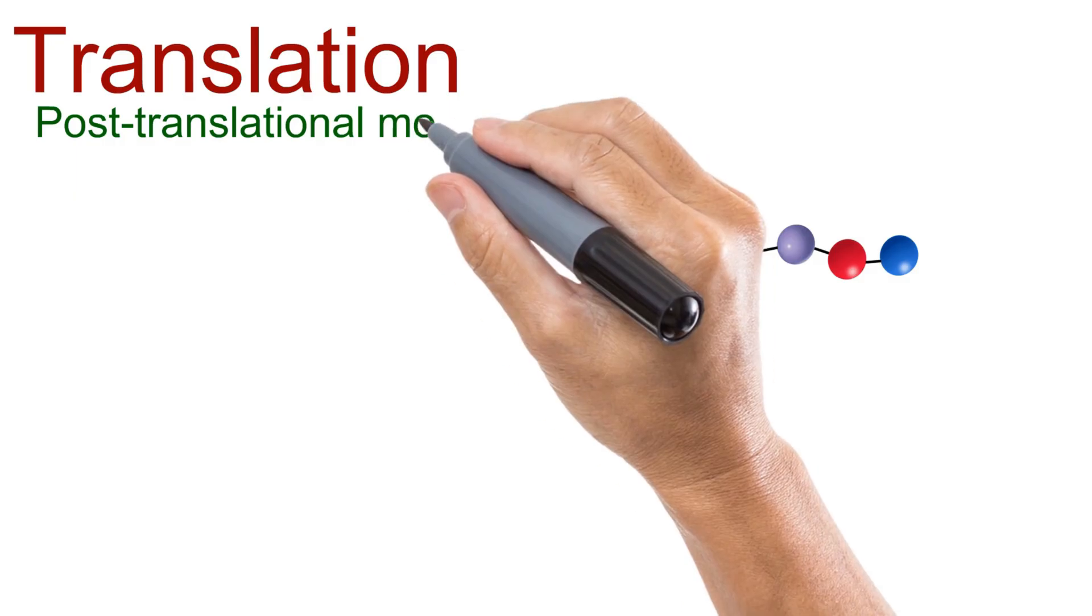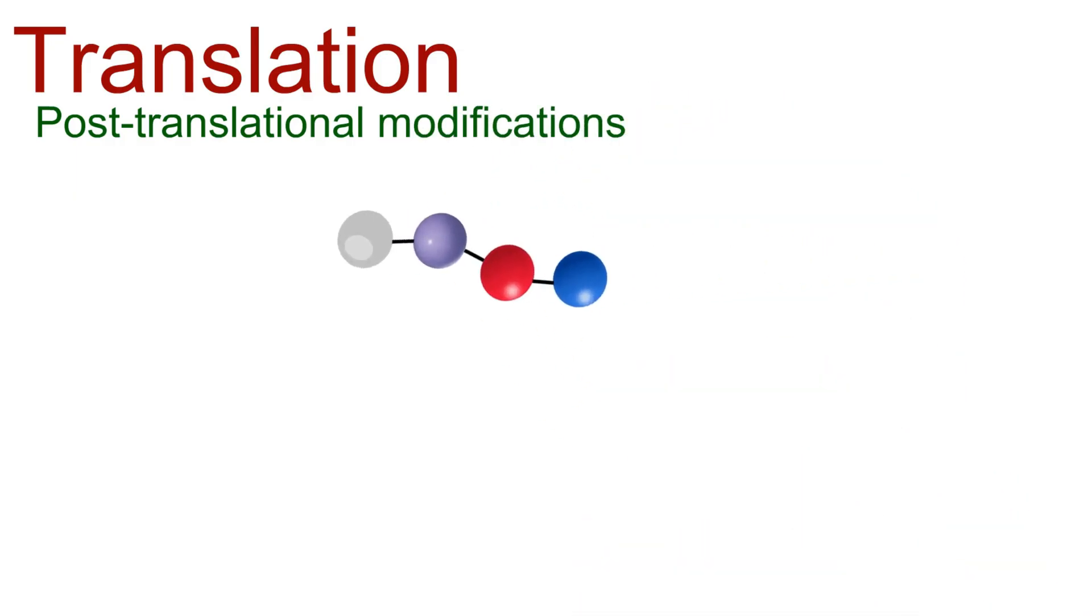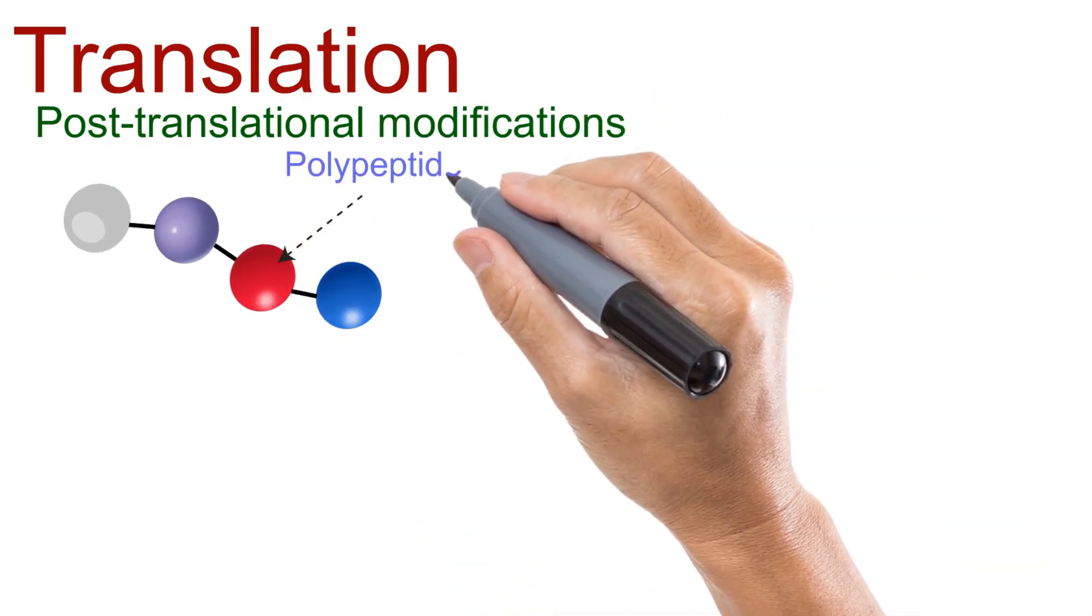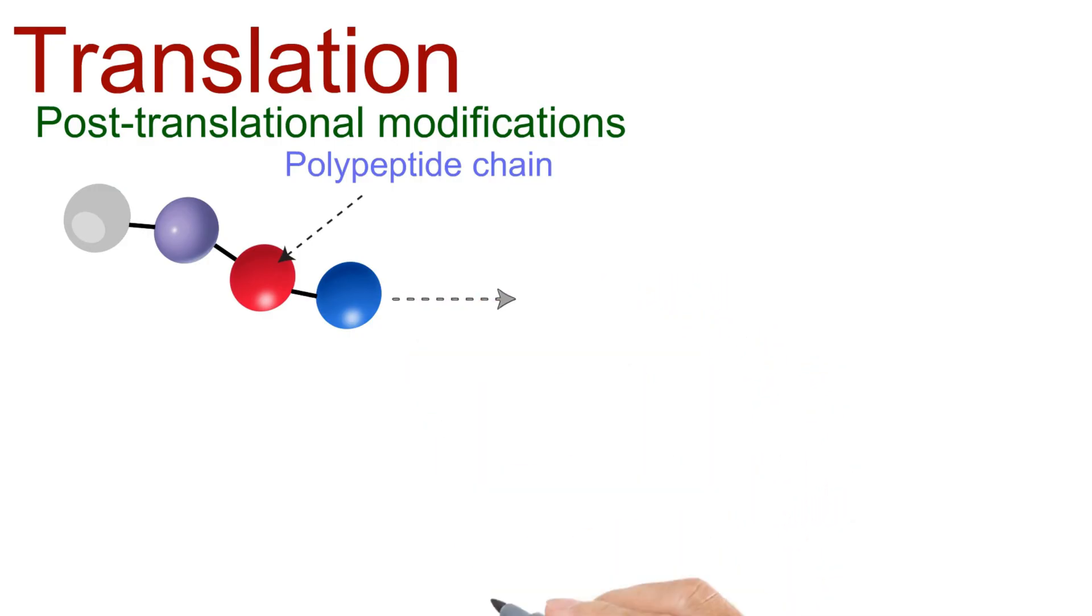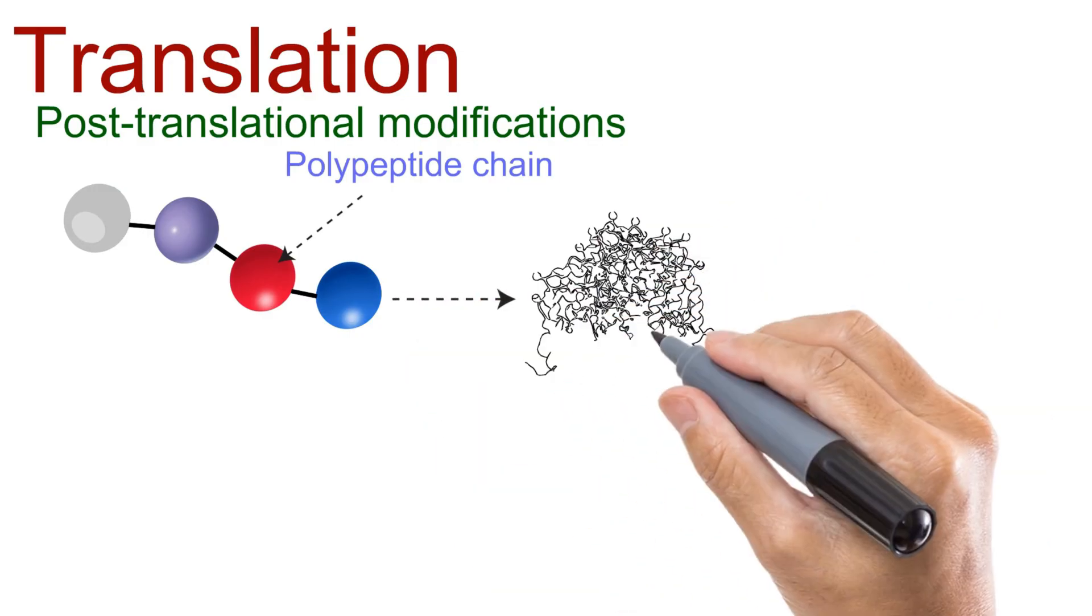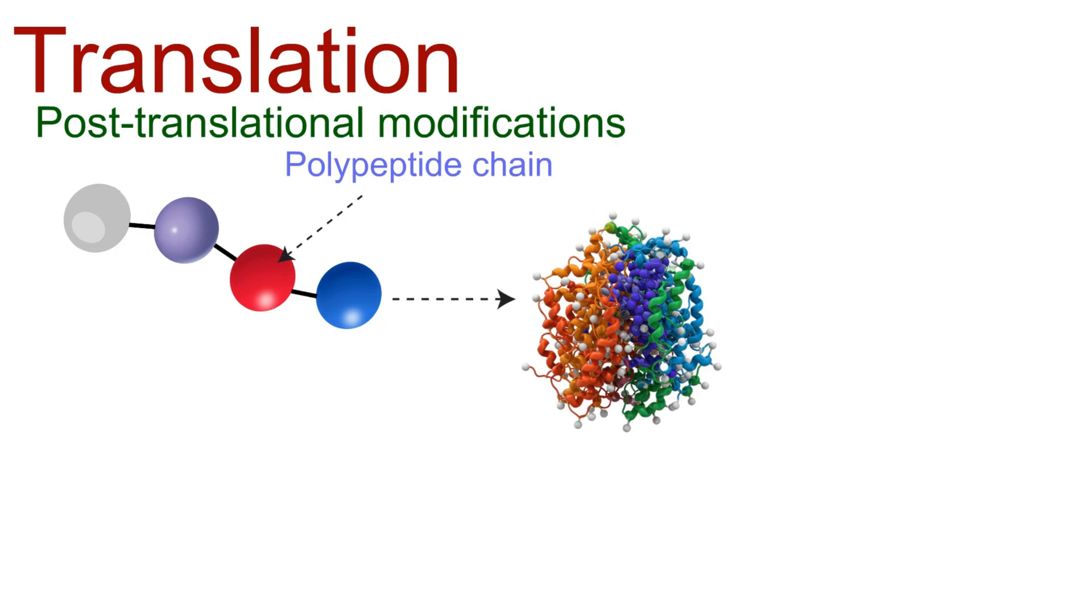But our story doesn't end here. The product of translation is a polypeptide chain, and on its own, it's not yet functional. To become a true protein, this chain folds into a specific 3D shape, guided by various chemical interactions and bonds.